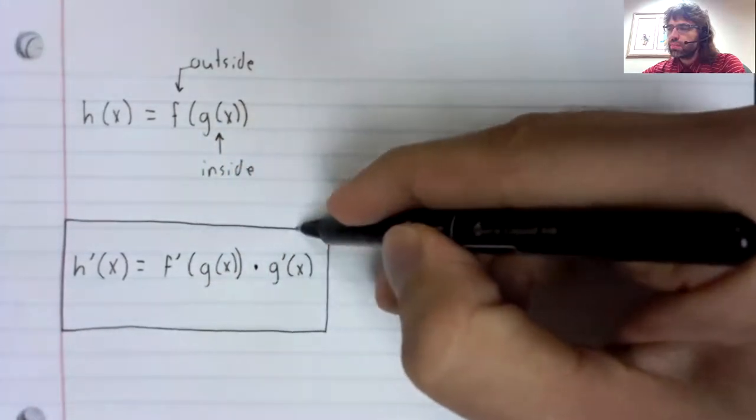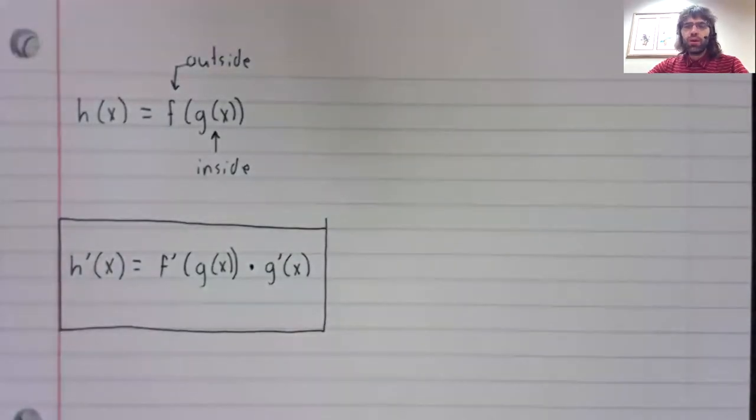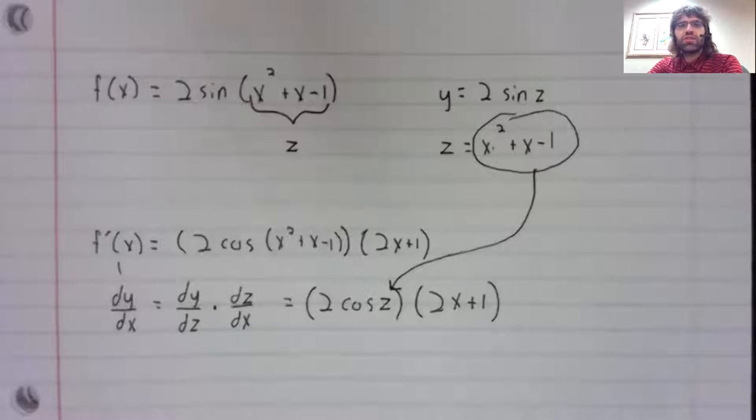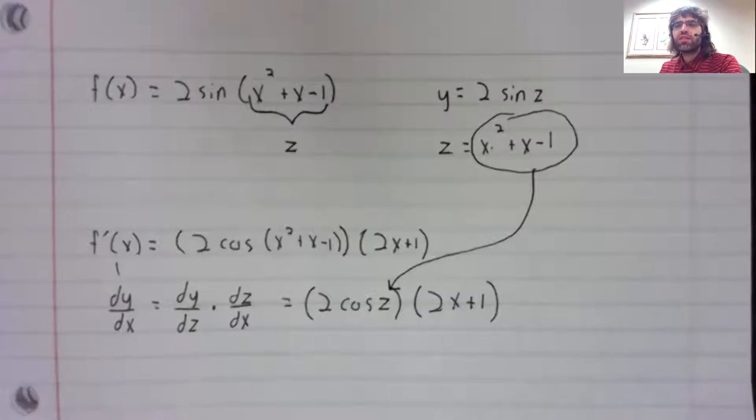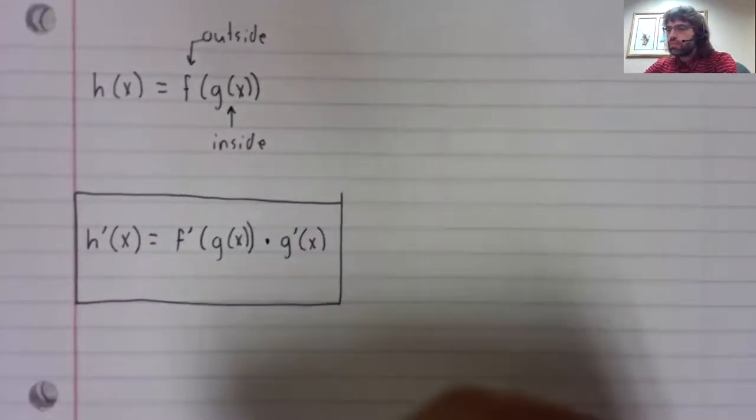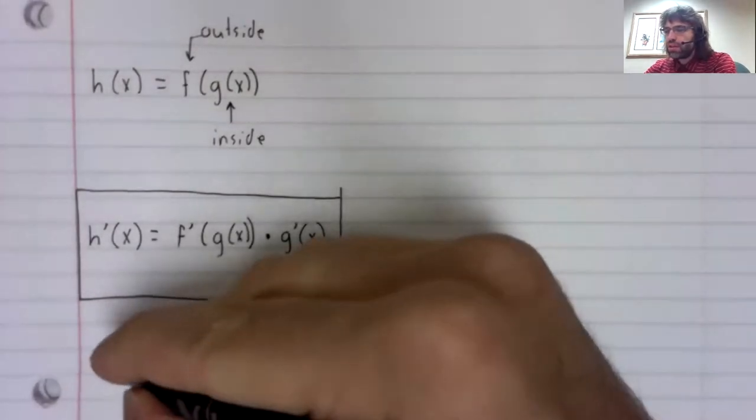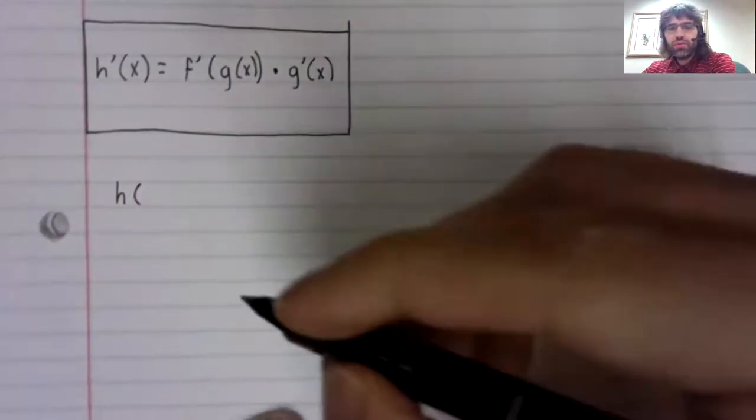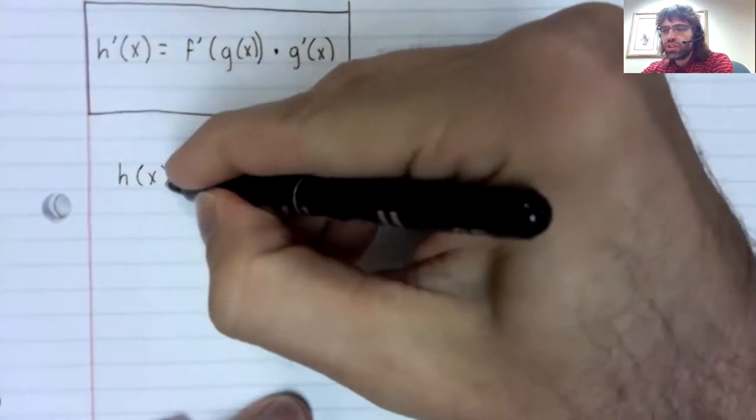This is version two of the chain rule. Let's return to this derivative. We took it using version one of the chain rule. Now let's take it again. So to use the chain rule, you have to recognize that you've got composition.